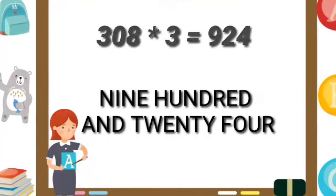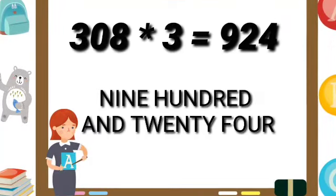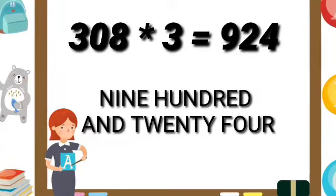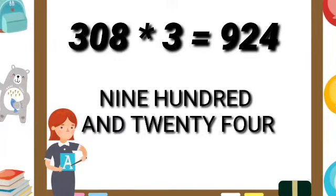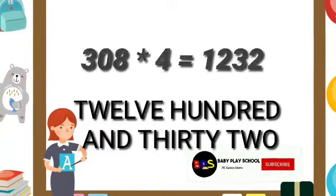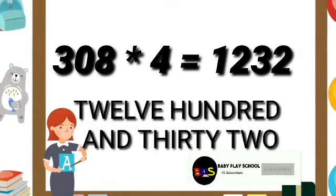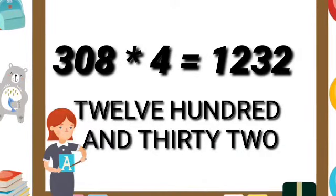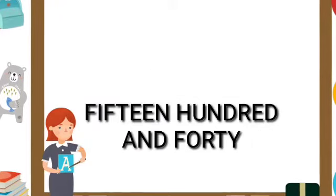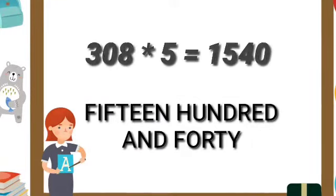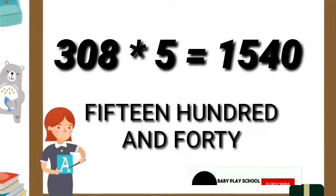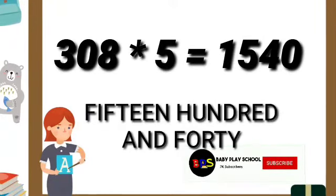308 threes are 924. 308 fours are 1232. 308 fives are 1540.